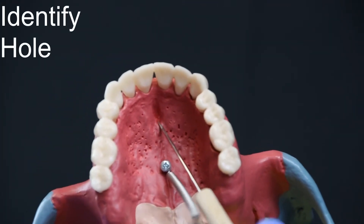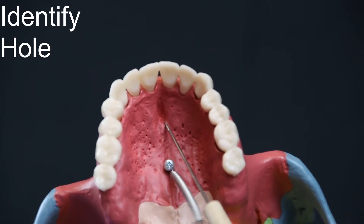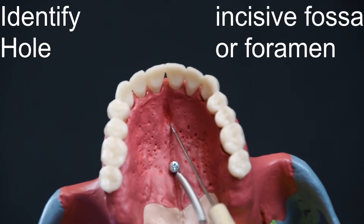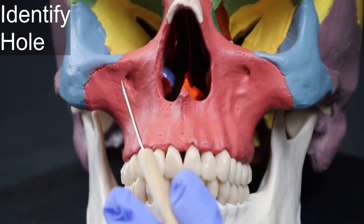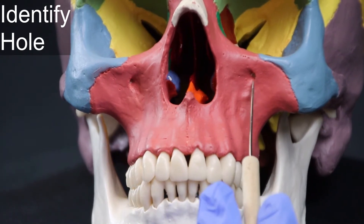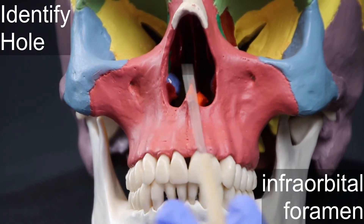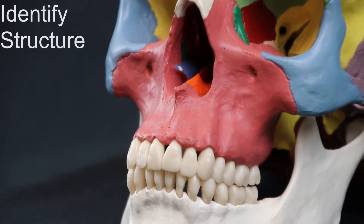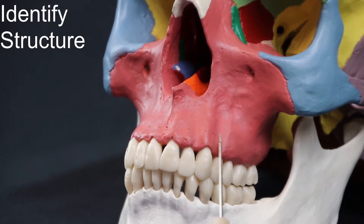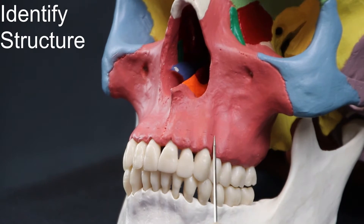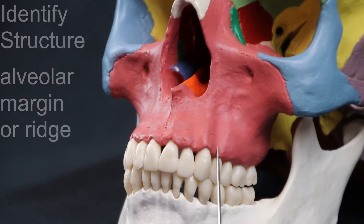I.D. Hole. Incisive fossa or foramen. I.D. Hole. Infraorbital foramen. I.D. Structure. Alveolar margin or ridge.